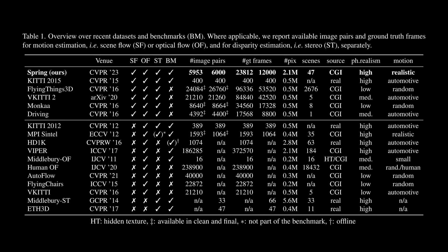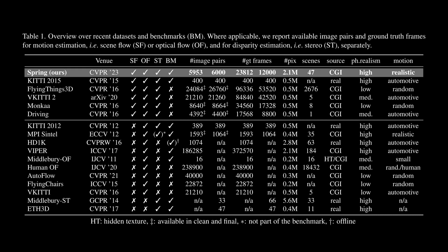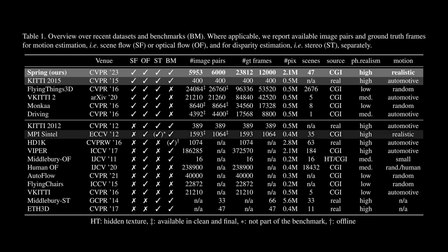Let us now describe our dataset and benchmark in more detail. First, we compare Spring to other datasets from the literature. Spring consists of 6,000 rendered stereo image pairs from 47 scenes. Since we compute left and right as well as forward and backward ground truth, we obtain over 23,000 ground-truth frames for motion estimation and 12,000 ground-truth frames for stereo estimation. With that, Spring is 60 times larger than the only other scene flow benchmark in the literature, the widely used KITTI 2015 benchmark. In the context of optical flow, Spring is 15 times larger than the well-established MPI Sintel benchmark.